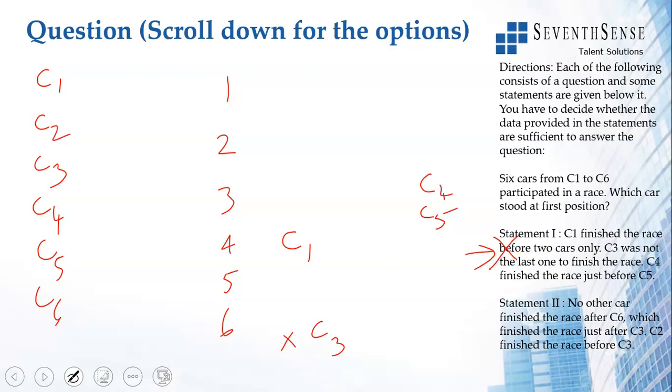Let us look at statement 2 alone now. No other car finished the race after C6. So, C6 is here. It finished the race just after C3. C2 finished the race before C3. C2 could be anywhere.